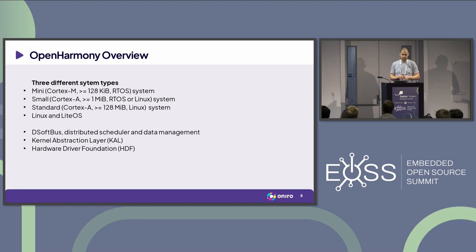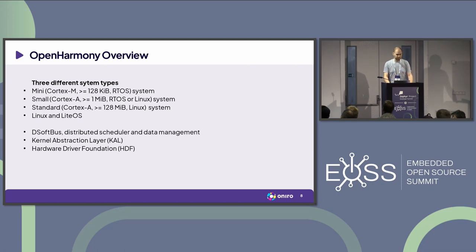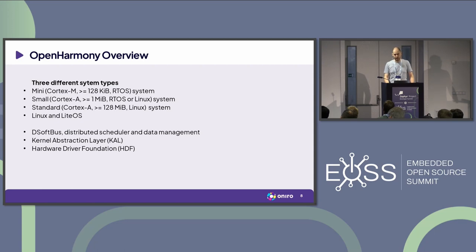The three different system types in Open Harmony: mini — that would be the level of a Cortex-M, it doesn't have to be ARM, there is support for other architectures, but it needs at least 128 kilobytes of RAM and runs on RTOS. Then small systems could be Cortex-A level, operating on either RTOS or Linux. And then the standard system, which is only supported on the Linux side.